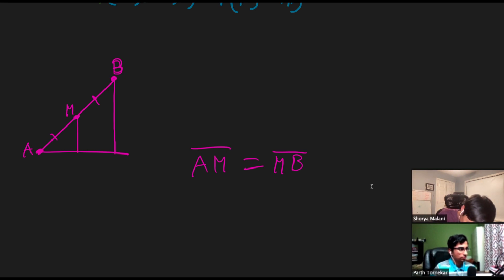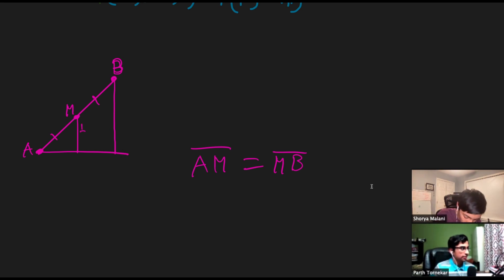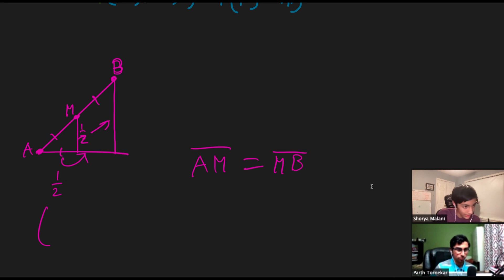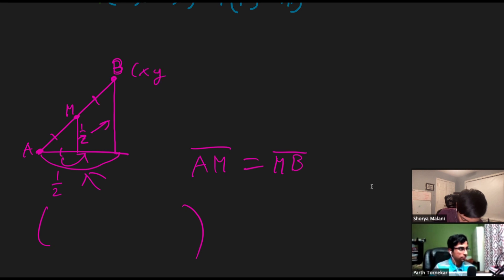We can draw a triangle out of this. Using triangle similarity — if this is half of this side, then this is also half of this, and this bit is half of that. So basically you don't need to do much. Using what we learned from above, the difference in x is x minus g, and we just want the middle, so we divide by two.